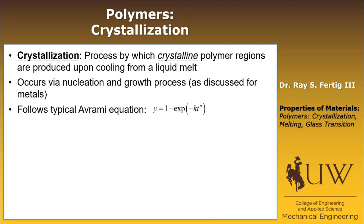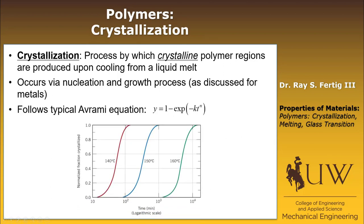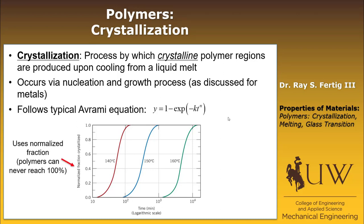To remind you, along with the graph: Y in the Avrami equation is the normalized fraction that's crystallized, T is time, and K and N are empirically fitted constants. The only difference between the use of the Avrami equation for polymers versus metals is that for polymers we can never get to 100% crystallized, so we use a normalized fraction where we normalize by the maximum amount that can be crystallized.